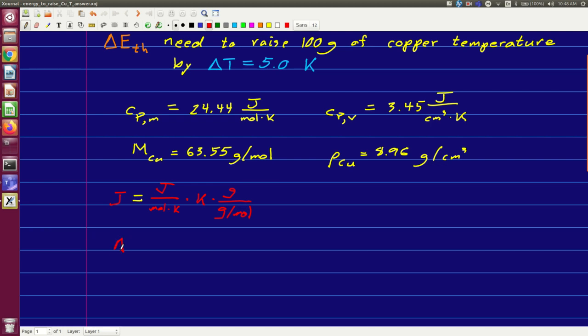And so what we're seeing is that our change in thermal energy should just be this. And if you plug in the numbers, you're going to get something around 190 joules. And of course, you can do exactly the same thing with these volumetric quantities.